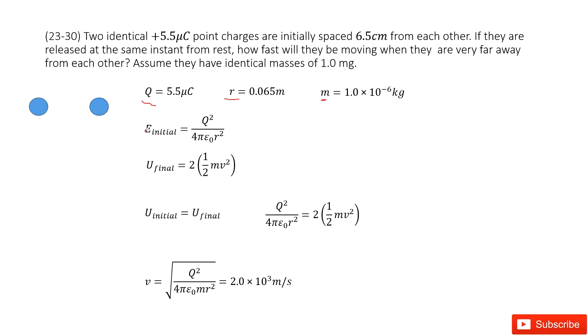So, initial energy is electric potential energy. We can write it as U. Initial potential energy equals Q squared - this is two charges - divided by 4π epsilon naught R squared.